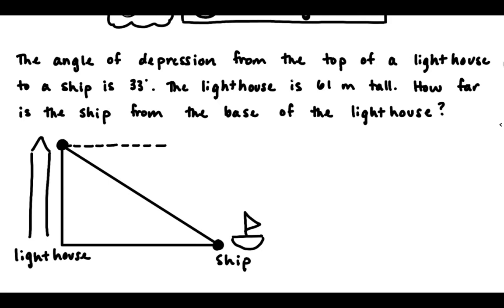The angle of depression from the top of a lighthouse to a ship is 33 degrees. The lighthouse is 61 meters tall. How far is the ship from the base of the lighthouse? So I recommend reading through it once, then read through again, and as you come to a piece of information, put that on your diagram.